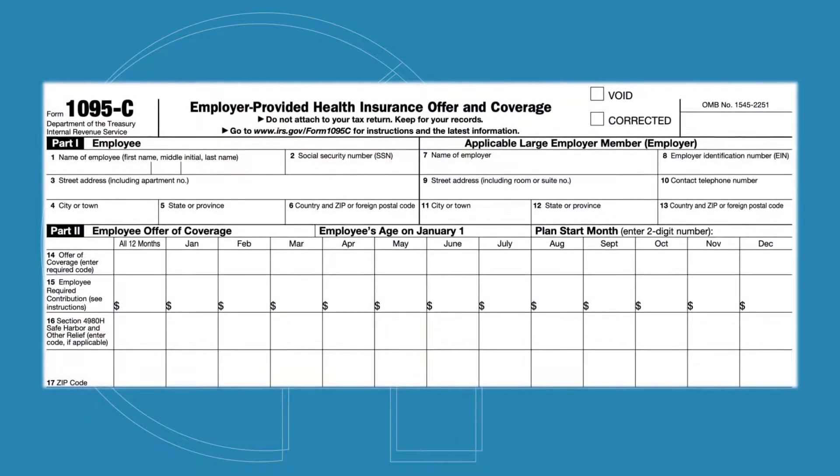Sure, so when we're talking about reporting requirements, the main form we're talking about is this form 1095C and these are basically tax forms that you're going to file under ACA with the IRS each year.